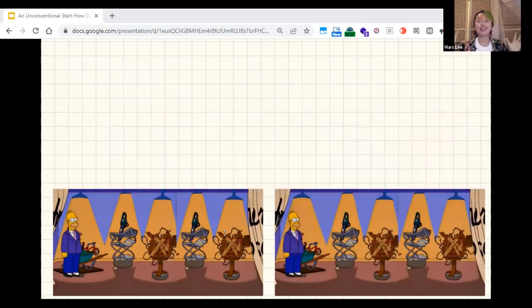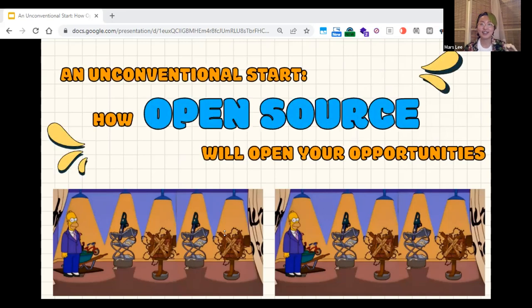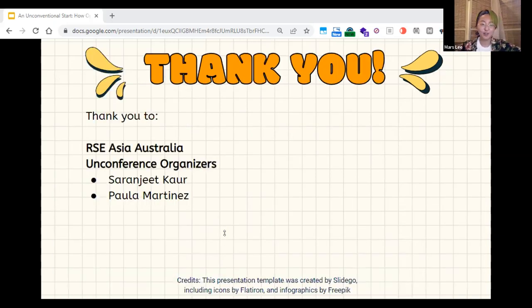And so congratulations. You've reached the end of my keynote. I have pulled back the curtains and actually revealed the true nature of this talk. It is about you, that it is about how you can have an unconventional start and how open source could open your doors and your opportunities. You can fill this gallery so that we can have better, stronger open source and better, stronger research software. And so thank you.